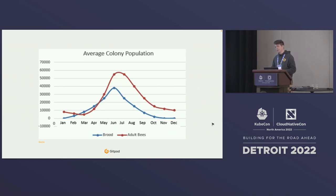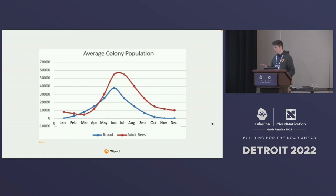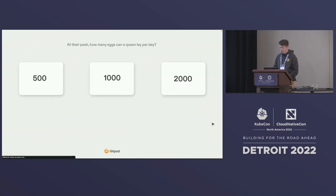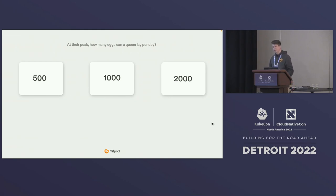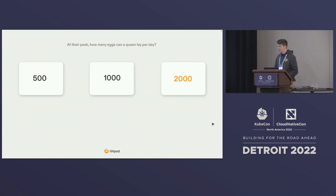Here you can see the average colony population over a year — a very Eurocentric view. We go from a mere 5,000 bees in winter up to 60,000 bees in summer. Another show of hands: at their peak, how many eggs can a queen lay per day? The answer is 2,000 — a queen can bring to life 2,000 bees in a single day.